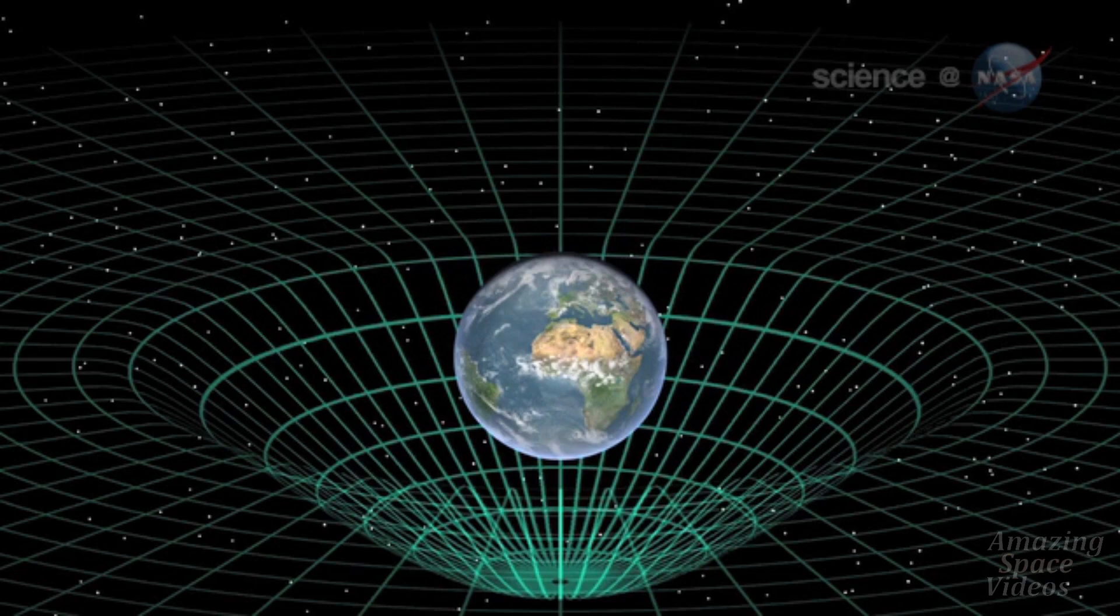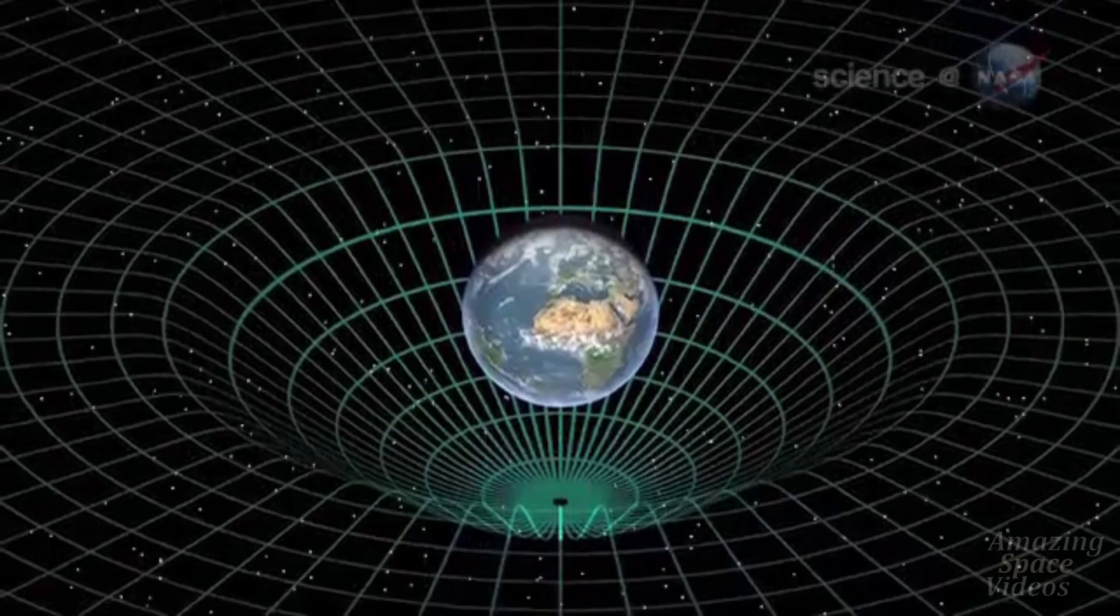If Earth were stationary, that would be the end of the story. But our planet spins, and the spin should pull the dimple around in a four-dimensional swirl.